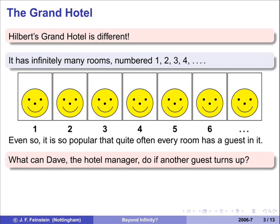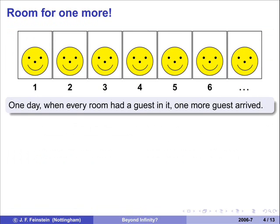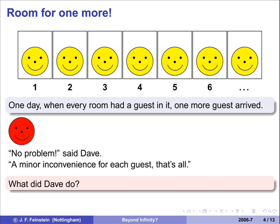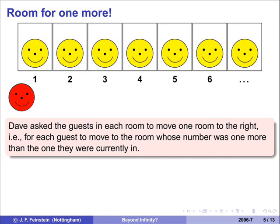And now what's Dave going to do when one more person turns up? Well, there's room for one more, as we will see, because Dave said to the new guest, it's no problem, we'll fit you in. Just a minor inconvenience for everyone. We'll just make everybody move to the next room along. They all move simultaneously, really, because otherwise it's going to take too long.